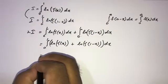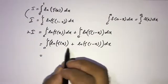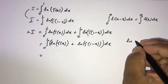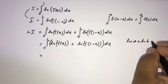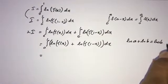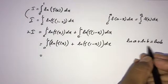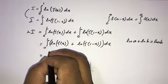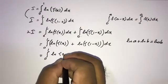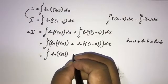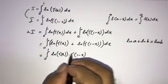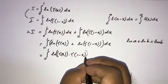Now we know the property that natural log of a plus natural log of b equals natural log of a times b. According to this, we can write the integral from 0 to 1 of natural log of [gamma(x) times gamma(1 minus x)] dx.